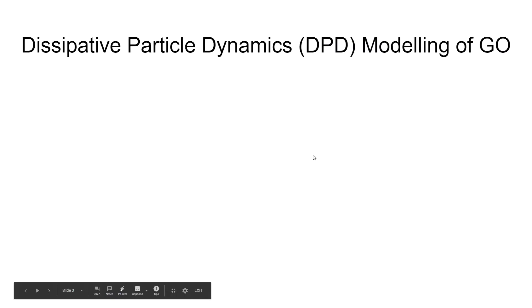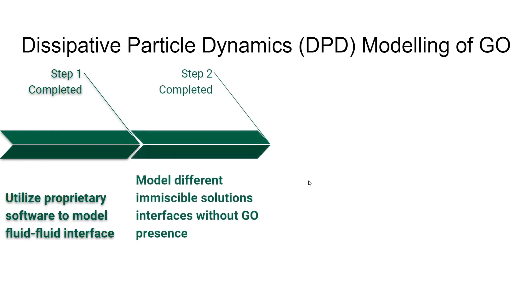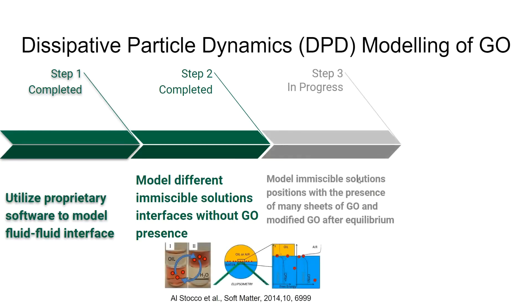For this project, we decided to use dissipative particle dynamics for modeling the graphene oxide. The first step was to utilize a proprietary software to model the fluid-fluid interface — in our case, a software provided by Dr. Hoare from Case Western Reserve University. The second step was to model different immiscible solution interfaces without graphene oxide present, which was completed in prior steps during the summer. The third step, which is still currently in progress, is to model immiscible solution positions with the presence of many sheets of graphene oxide and modified graphene oxide at equilibrium.